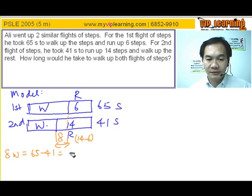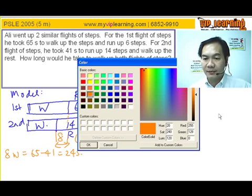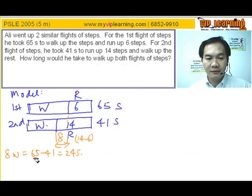Which is 24 seconds. Therefore, 1 step of walking takes 3 seconds more compared to running.